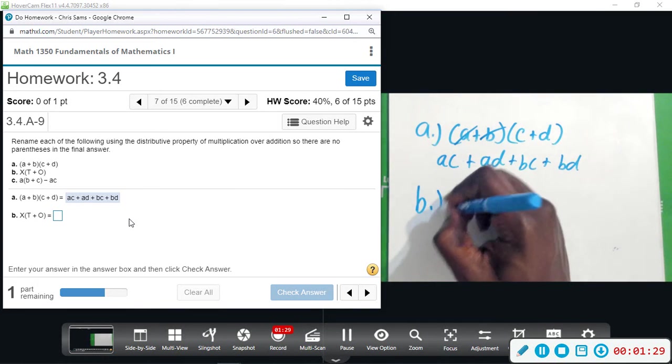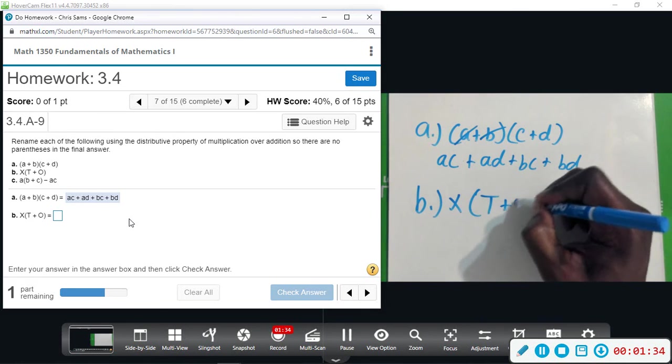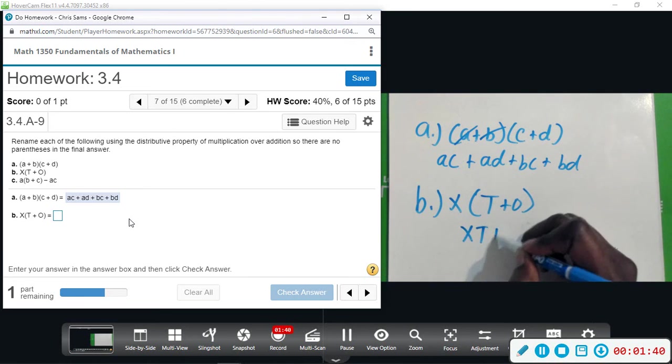So XT, and then distribute it to the O, so we'll get XO. XT plus XO.